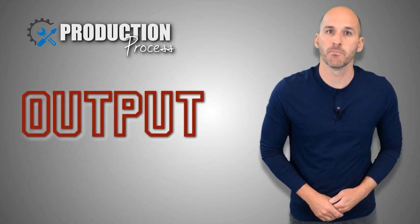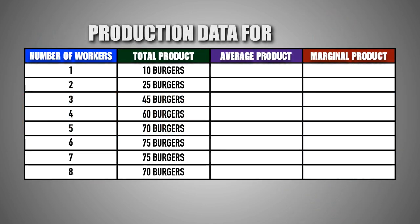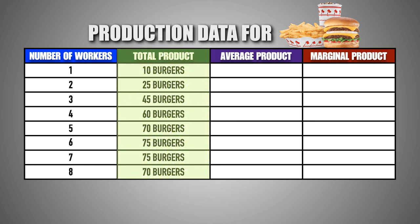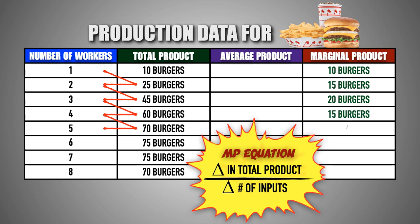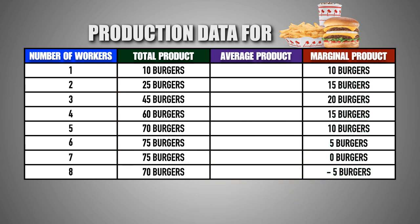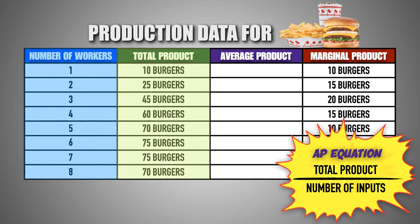Let's take a closer look at these output measurements. Provided is the production data for a typical firm in the fast food industry — let's say this firm is In-N-Out. We can see the total product, or the total number of burgers made by In-N-Out, after hiring each additional worker. To calculate the marginal product of each In-N-Out worker, we simply need to analyze the total product before and after hiring each worker. The difference in total product after hiring each worker gives us the marginal product. To calculate the average product per worker, we take the total product after hiring each worker and divide it by the total number of workers hired.